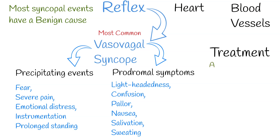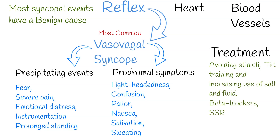Treatment: Conservative measures include avoiding situations or stimuli that have caused them, tilt training, and increasing use of salt and fluid. Drug therapy with beta blockers, SSRIs, hydrofluidrocortisone, or proamitine might be useful if conservative measures fail.